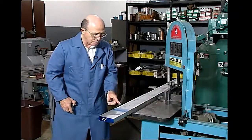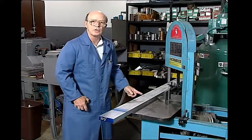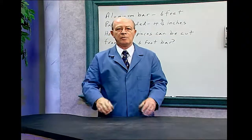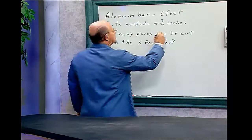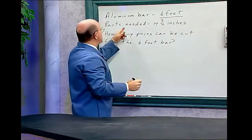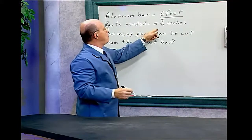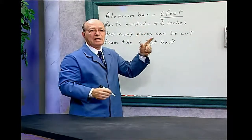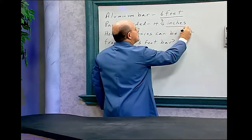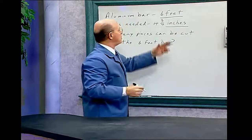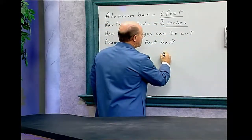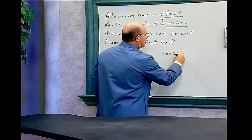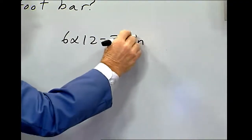Let's do the math. The aluminum bar is 6 feet and the parts need to be cut at 4 and 3/4 inches. We have to convert the 6 feet into inches, so 6 times 12 equals 72 inches.